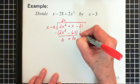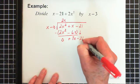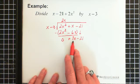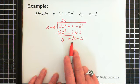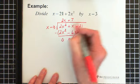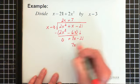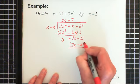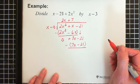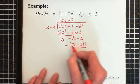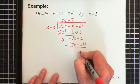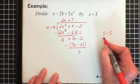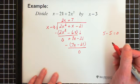The next step is to bring down our minus 21. We ask: what do we multiply by x to give us 7x? That's plus 7. So 7 times x is 7x, and 7 times minus 3 is minus 21. We subtract 7x minus 21 from 7x minus 21 — subtracting the same thing gives us zero. It's the same as 5 minus 5. So we are finished with this question.